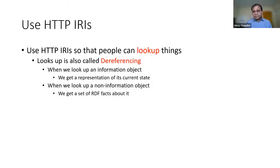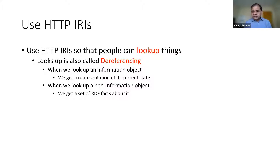The lookup of an IRI is also referred to as dereferencing. For a traditional information object — like a website — dereferencing works just as in a browser: you get the representation of the current state of that IRI. But for a non-information object, dereferencing returns a set of RDF facts about it, either directly or embedded in a web page.